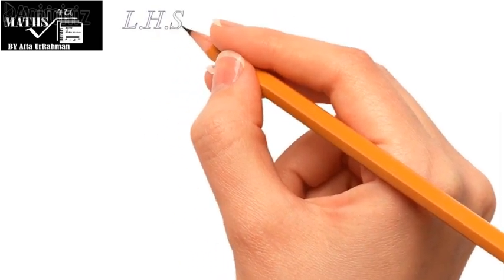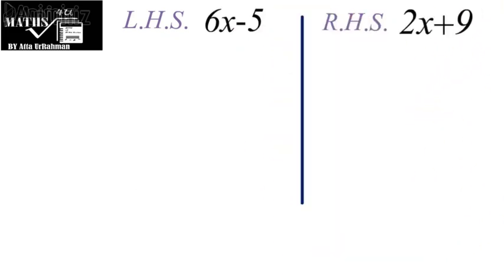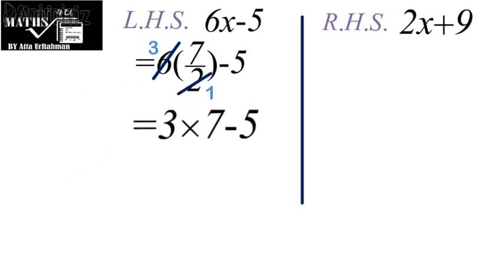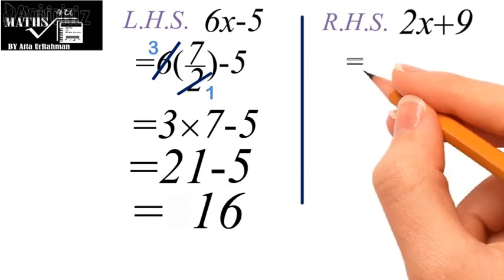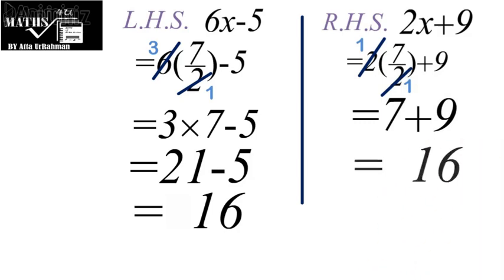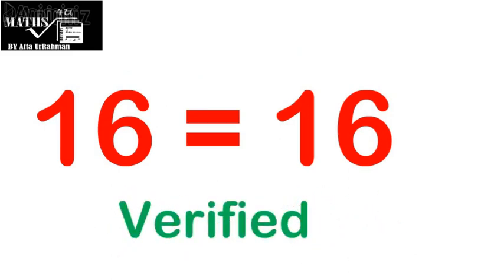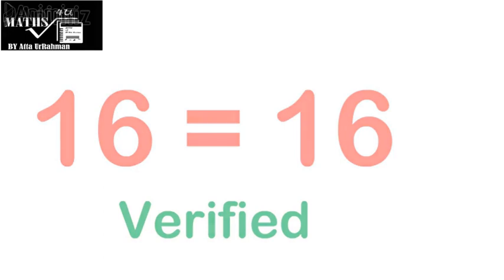In order to verify the solution, we note that there is x on both the left hand side and the right hand side, so we solve each side separately. The left hand side is 6x minus 5 and the right hand side is 2x plus 9. Replacing x by 7 upon 2 in the left hand side and simplifying gives 3 times 7 minus 5, which is 21 minus 5, and the answer is 16. Similarly replacing x by 7 upon 2 in the right hand side gives 7 plus 9, which is also 16. Since both sides give the same value, x equals 7 upon 2 is verified as the correct solution.